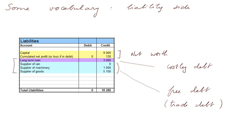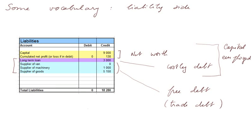Altogether, these are called external liabilities. Whereas the net worth accounts are not really liabilities — we can view them as money somehow due to the owners, that is the shareholders, but in truth they are not due. It's just a representation of the worth of the firm for the owners. We shall have many more calculations about the real value of the firm for the owners if they were to sell it. And one last term: the net worth plus the costly debt — that is the debt that you have to pay for on a yearly basis — this is called the capital employed. We shall have plenty of opportunity to see again these concepts of net worth, costly debt, free debt, and capital employed.